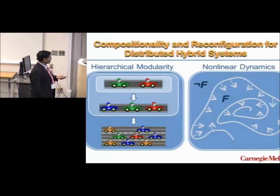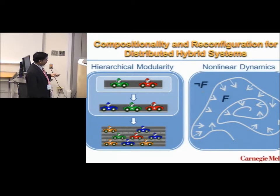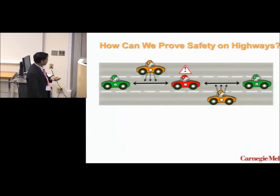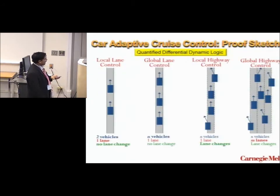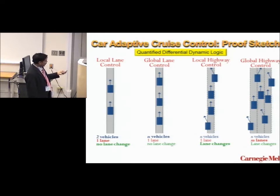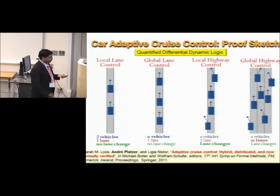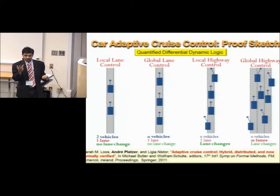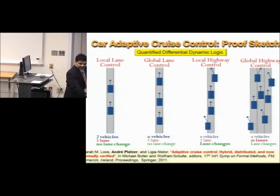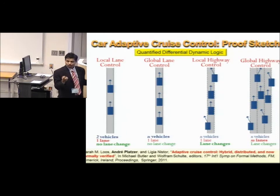Professor Andre Platzer has been looking at verification of hybrid systems. He can hierarchically capture what happens on a single lane with multiple cars, multiple lanes with multiple cars, and capture the nonlinear dynamics across these cars — how they communicate with each other. Through a sequential incremental process — local lane control, global lane control, local highway control, global highway control — using something called QdDL (Quantified Differential Dynamic Logic), he was able to formally prove that if you're changing lanes with adaptive cruise control and lane control software, the system will be safe and there will be no collision.